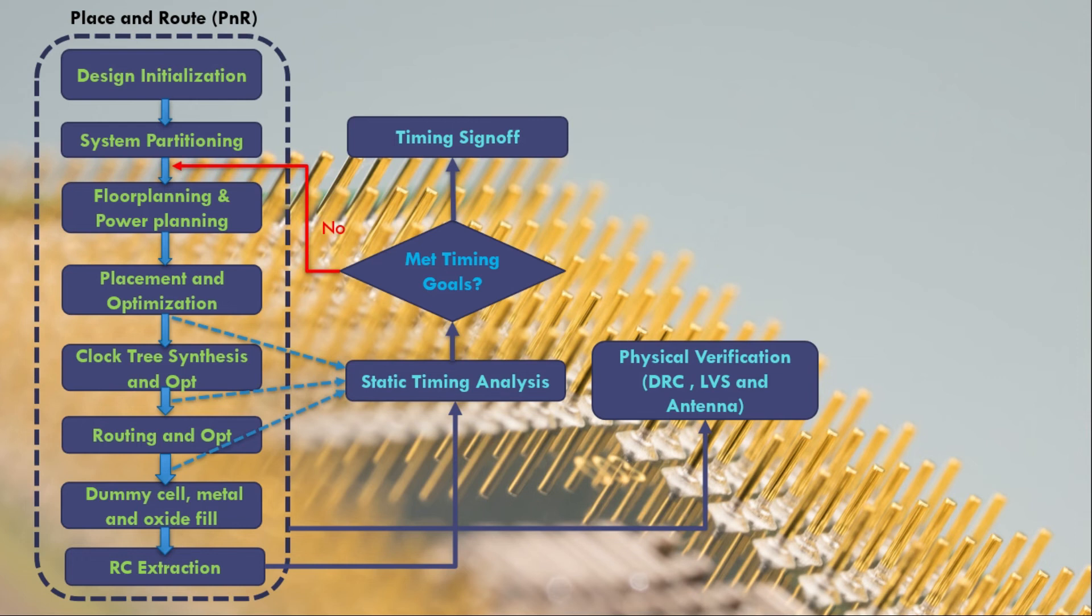The physical verification is the step where the DRC, which are the design rule checks, which comes from the foundry basically. There will be a book which will be given from the foundry or the vendor where all the design rules will be mentioned, such as minimum length of the metal and the minimum spacing between the metals. All this information will be available in the DRC. Tens of thousands of rules will be there. So we need to meet all those rules in order to manufacture our chips properly.